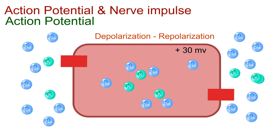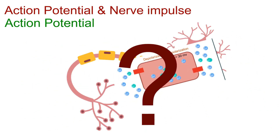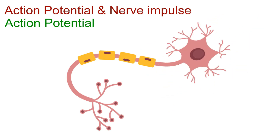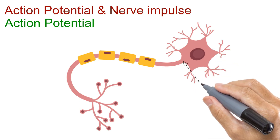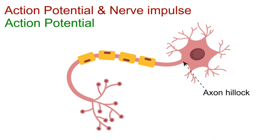And that single electrical event is what we call an action potential. Now the question is, how does this electrical signal travel along the neuron? Remember, an action potential starts at one point, usually the axon hillock, but it doesn't stay there. It moves forward along the axon like a wave.